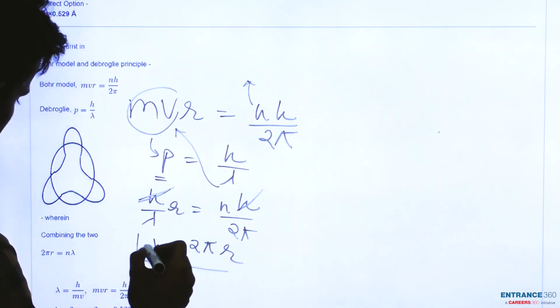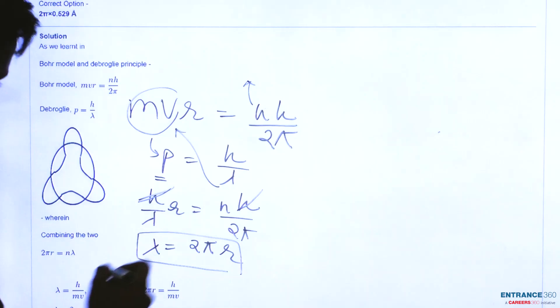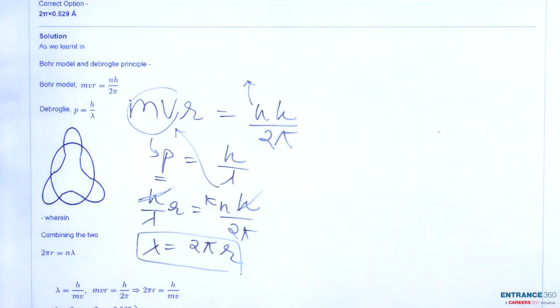From these values we can find what will be the value of wavelength. Since n is 1 in case of hydrogen it is present in ground state, so λ can be written as 2π into r.